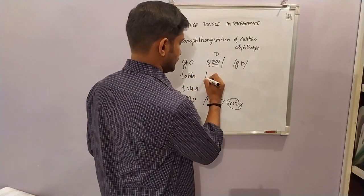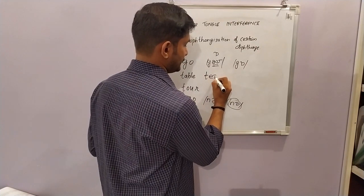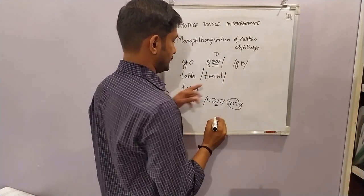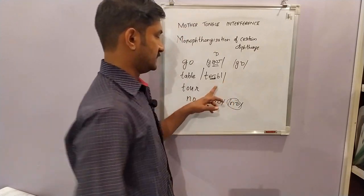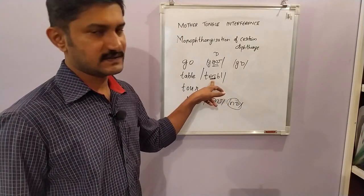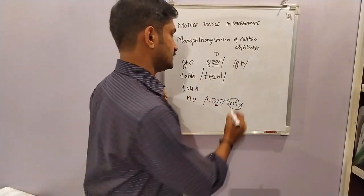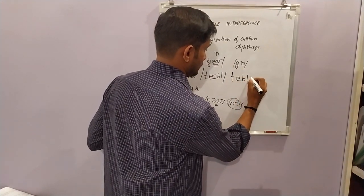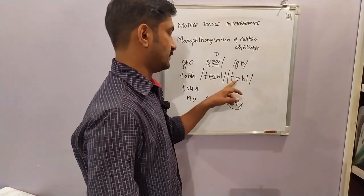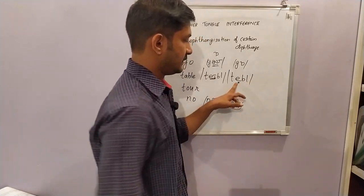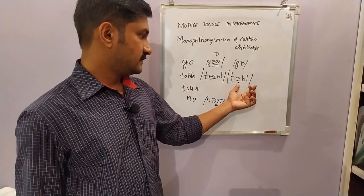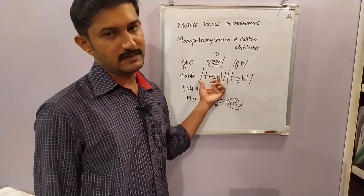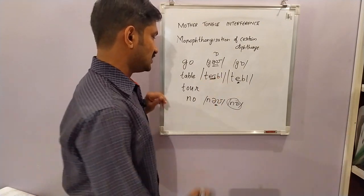Then this word — it is 'table'. This 'a' sound is a diphthong sound. We have a tendency to pronounce it as 'table' — we tend to replace this diphthong sound with a simple 'a'. It is 'table', not 'table'. Then 'tour' — this is the 'our' sound, it is a diphthong.